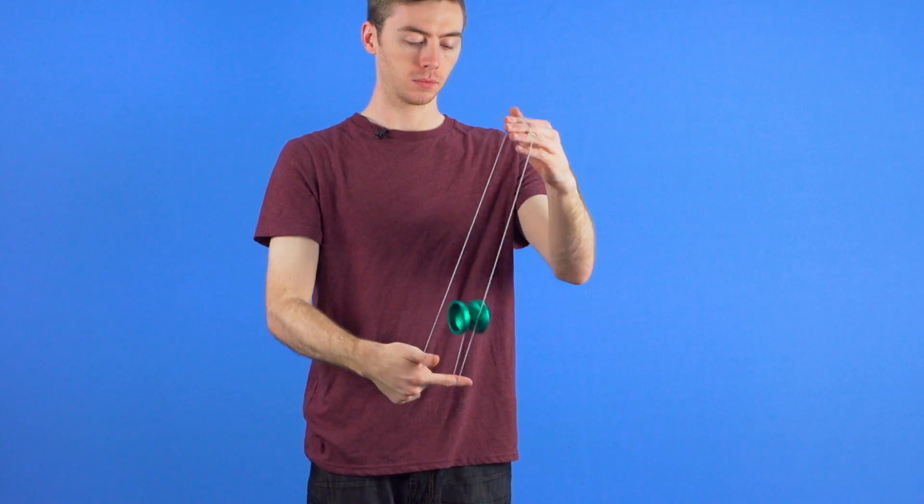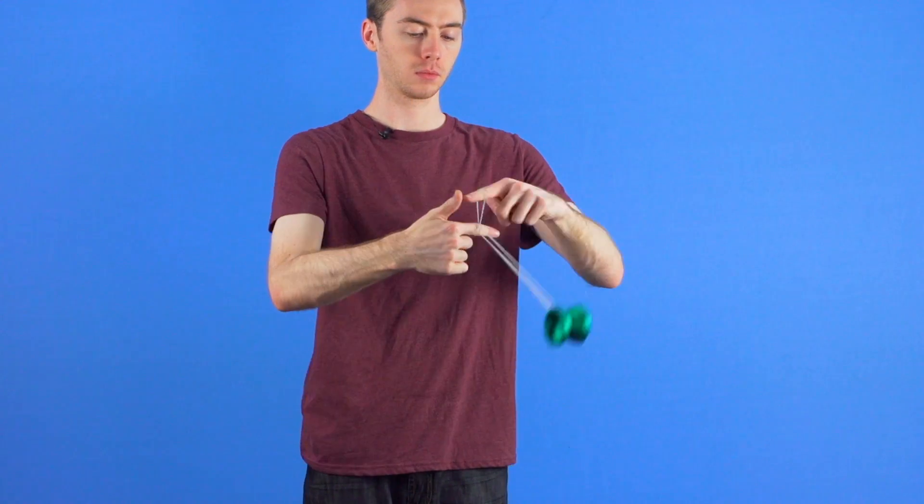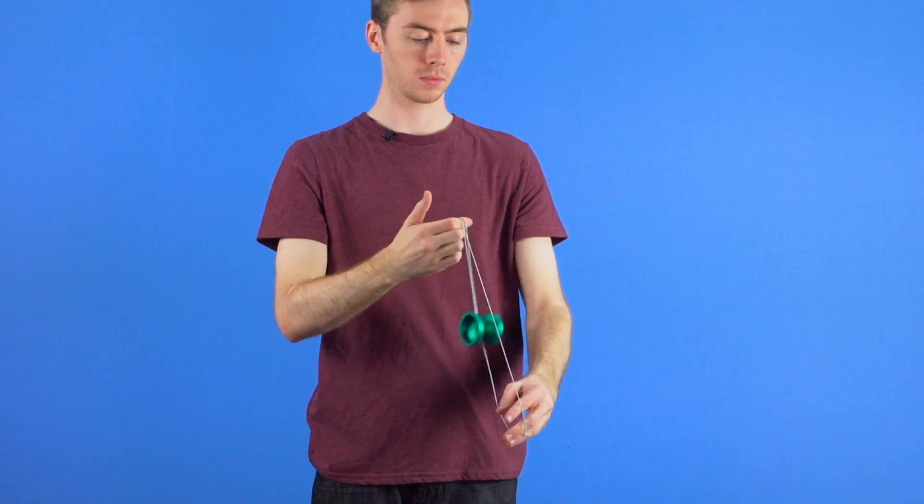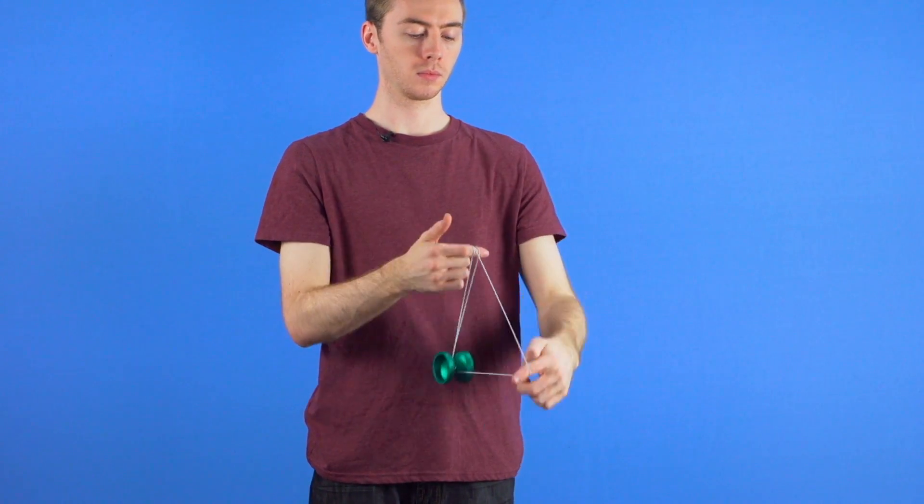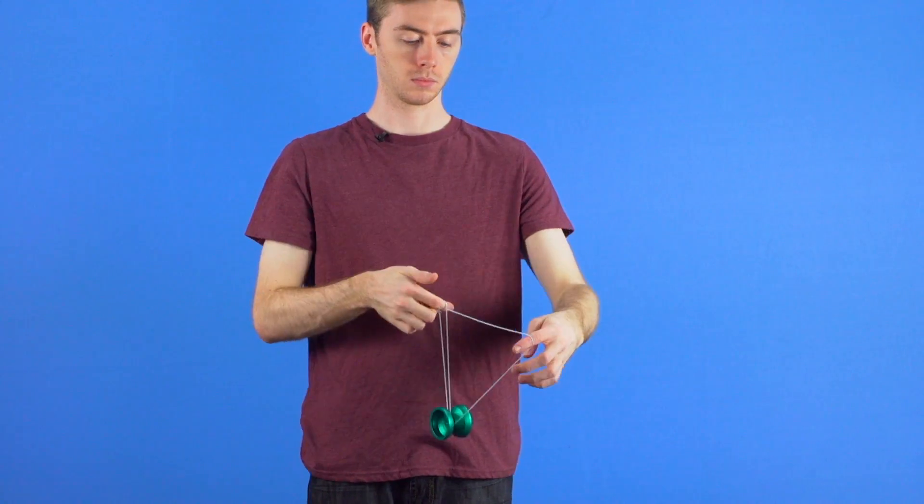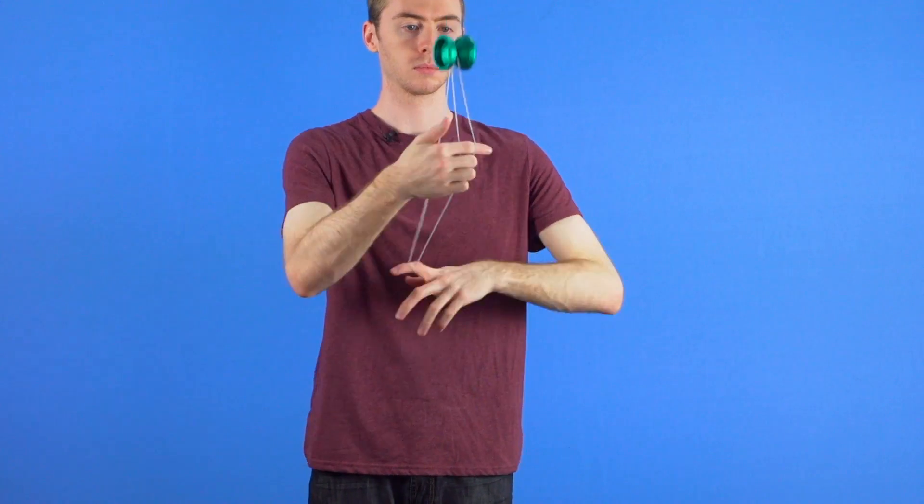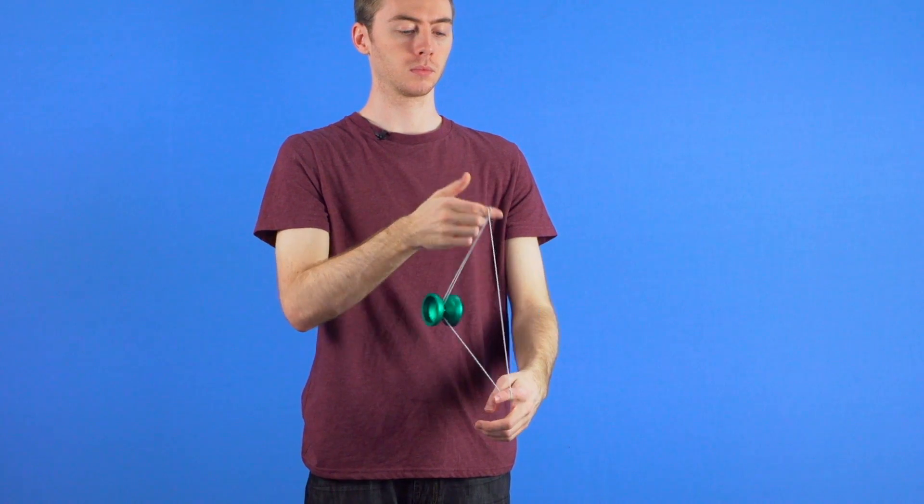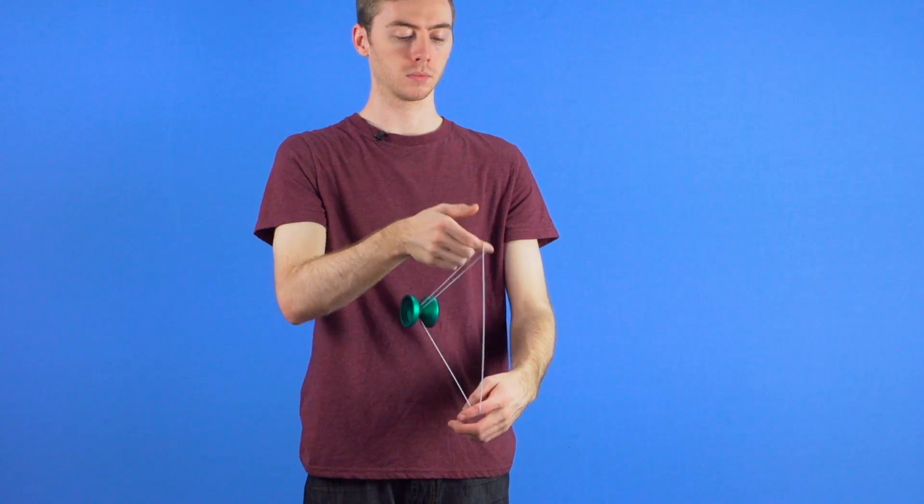To begin this series, I want to bring your attention to five tricks we've previously taught from the Split Bottom Mount, which are Split the Atom, Barrel Roll, Pop'n Fresh, Boingy Boing, and Sea Sick.